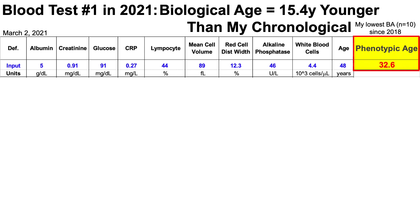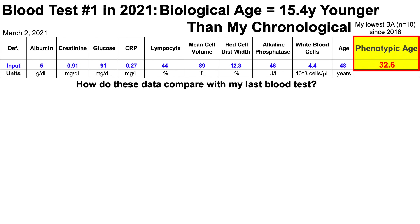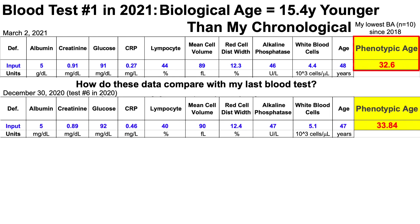Let's compare these data against a few blood tests. First, my previous blood test — how did these data compare with my last blood test? My last blood test was in December of 2020, just two months ago. Based on those data, my biological age was 33.8 years. So I've improved in the two-month period since then.